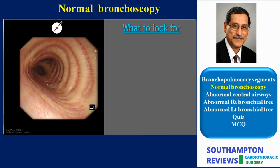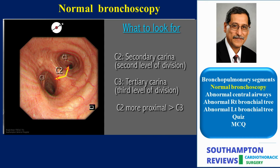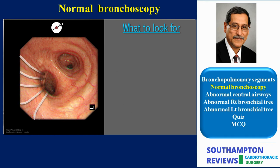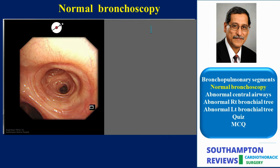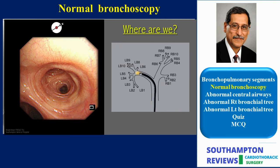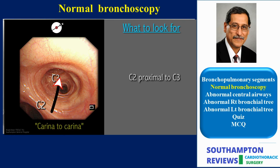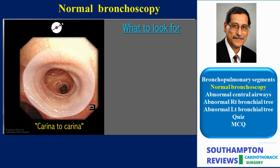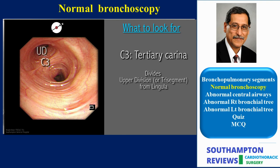On introducing the scope further down the left main, we first make note of the sharp secondary carina C2 between the left upper and lower lobe orifices. Also note the more distal origin of the tertiary carina, which divides the segmental bronchi. The membranous part, as always, will lead us into the lower lobe orifice — this is an important sign and I find it very helpful when confused about orientation. On advancing the scope into the upper lobe bronchus, note is made of the carinae first to define inlet and outlet. Here again, the surface area from carina to carina makes up the upper lobe bronchus. On approaching the upper lobe divisions, it's important to identify the tertiary carina C3 between the upper divisions and the lingula.